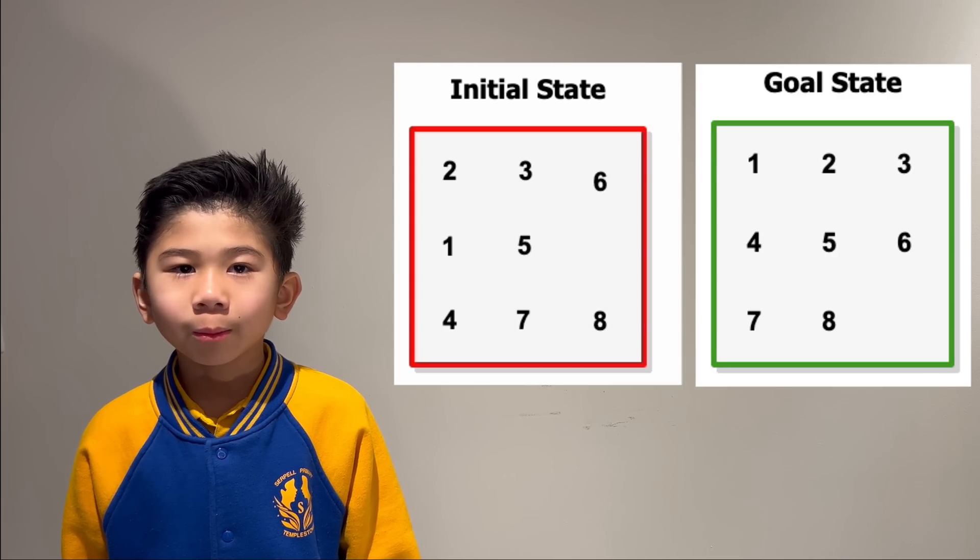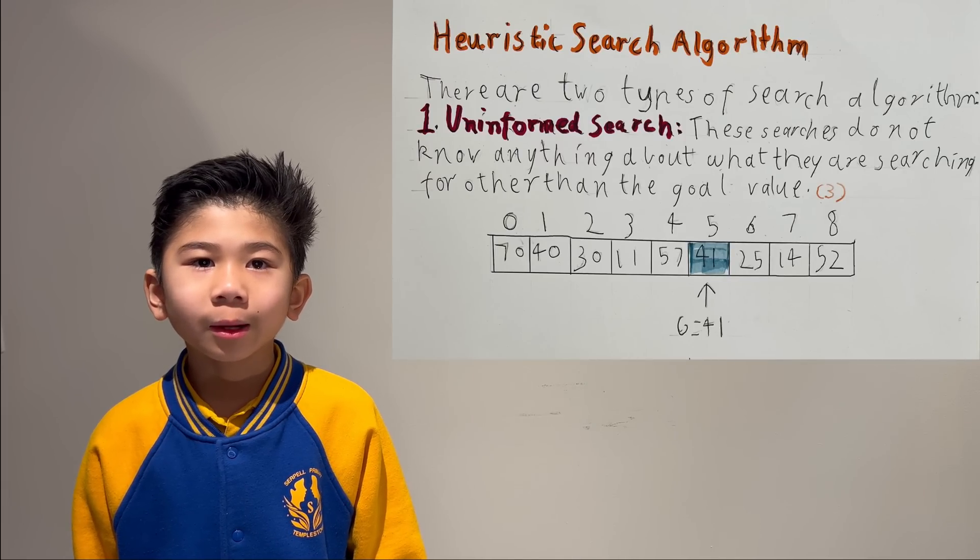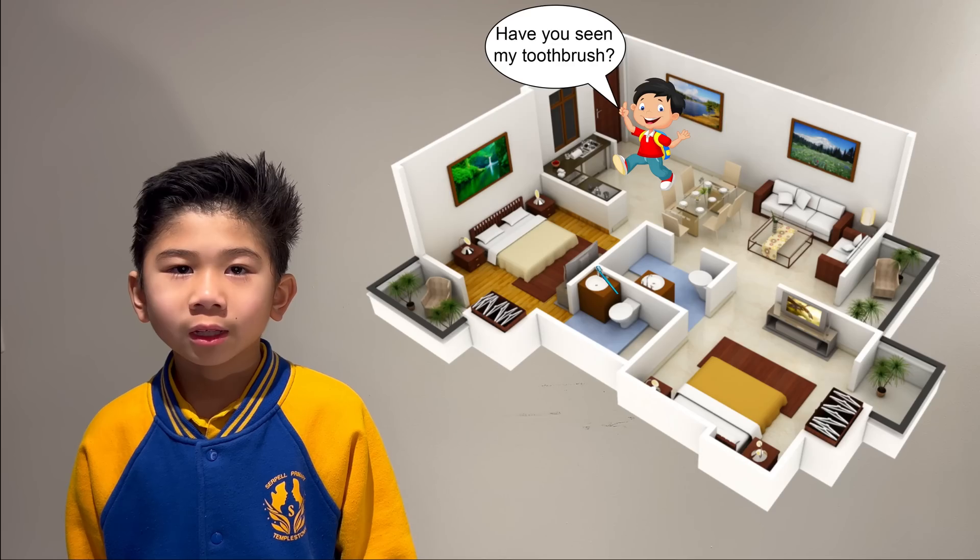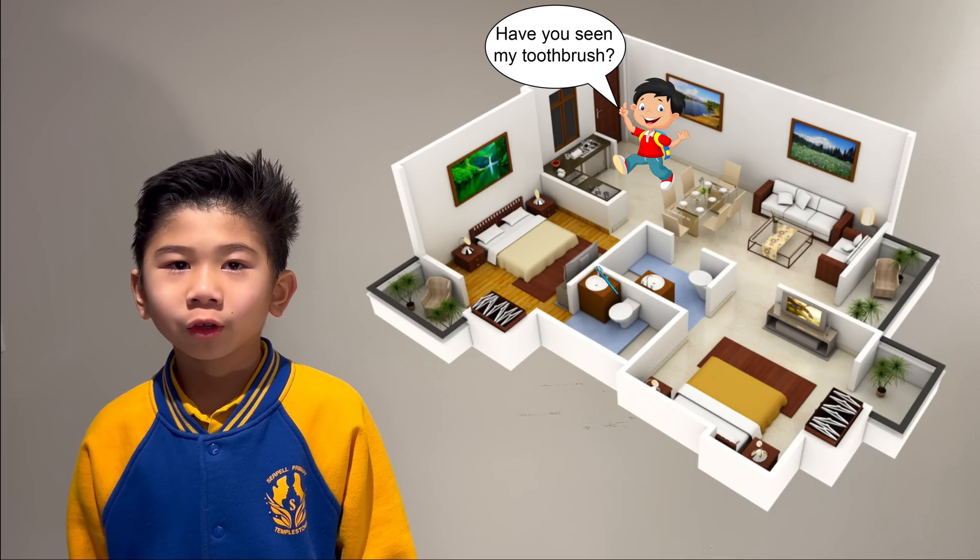There are two types of search algorithms. An uninformed search. These searches do not know anything about what they are searching for other than the goal value. For example, it would be like searching every room in the house for a toothbrush.